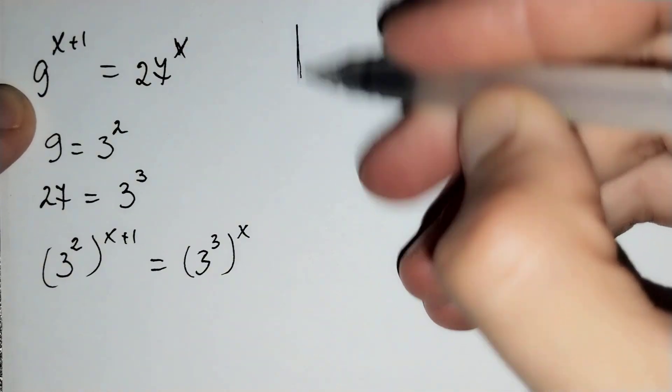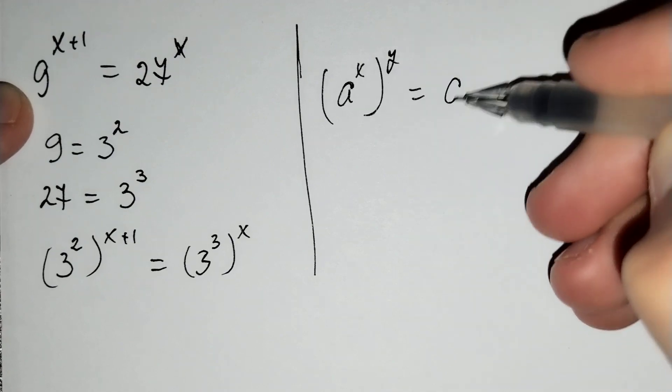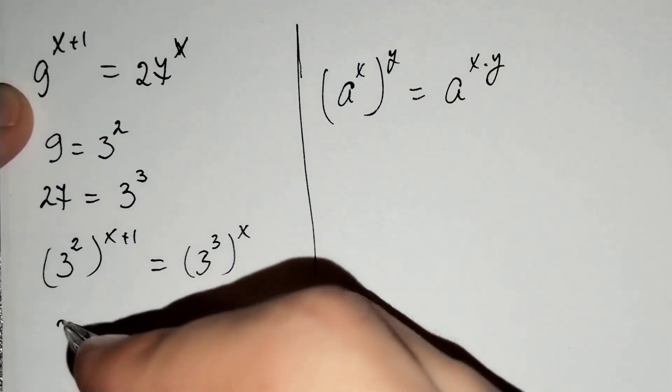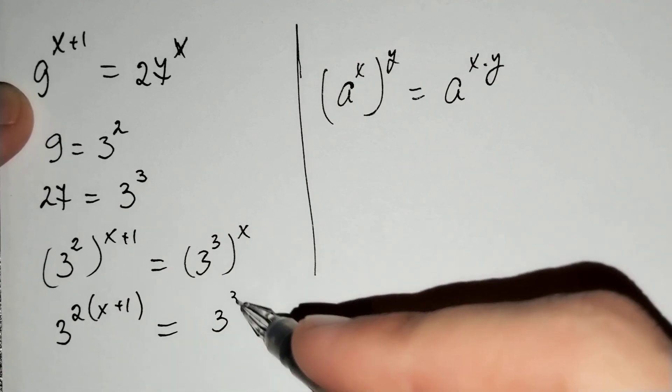We should know that a to the power of x in brackets to the power of y equals a to the power of x times y. Using this formula, this equals 3 to the power of 2 times x plus 1 equals 3 to the power of 3x.